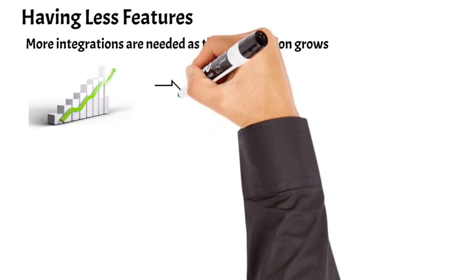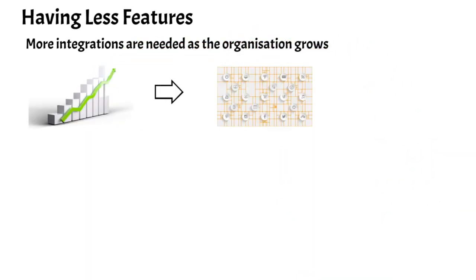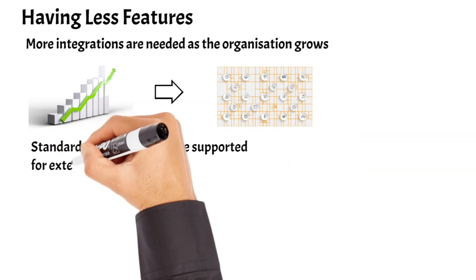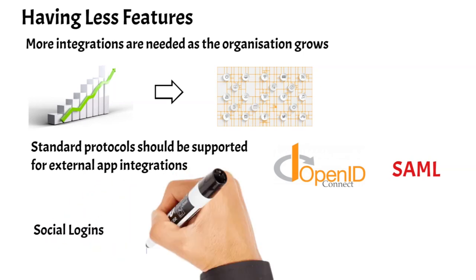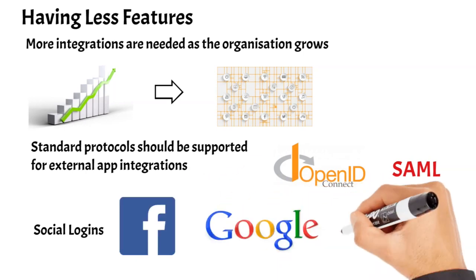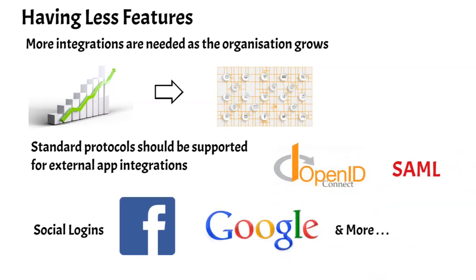Another problem is fewer features. As the organization grows, it needs to integrate with so many other business applications. To integrate with external applications, organizations should support standard protocols like OpenID Connect or SAML. Perhaps you might also need to enable social logins for users to log in using platforms like Facebook or Google. Developing these features as an in-house application will be a time- and money-consuming task, but these features are provided built-in with industrial identity and access management systems.